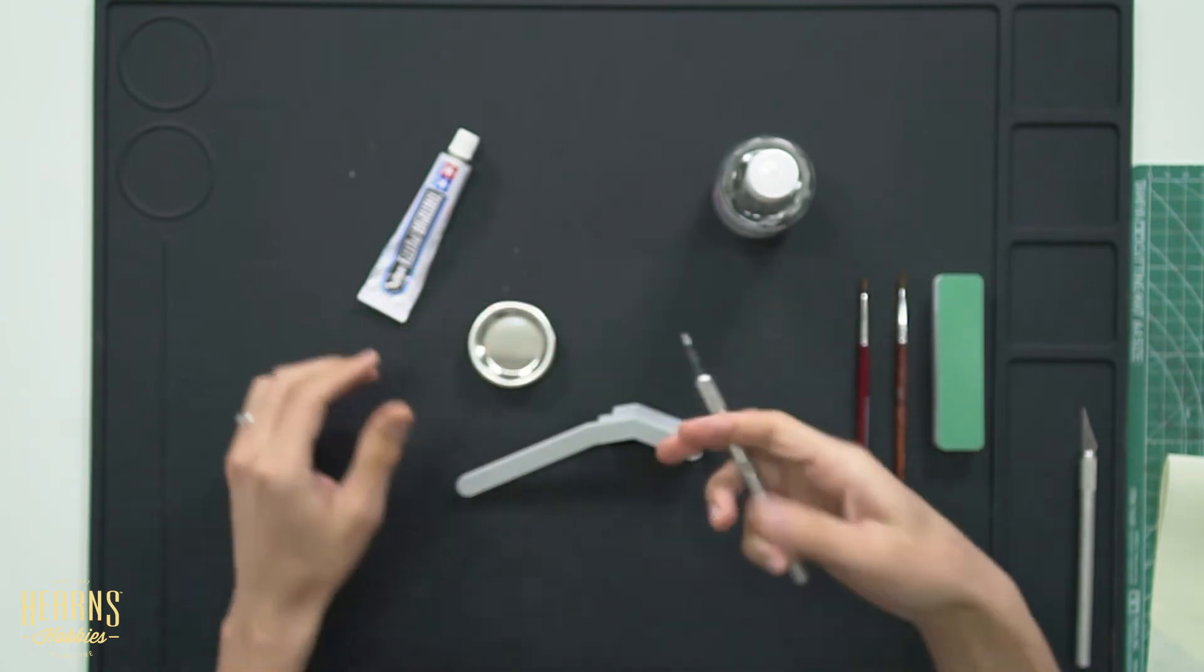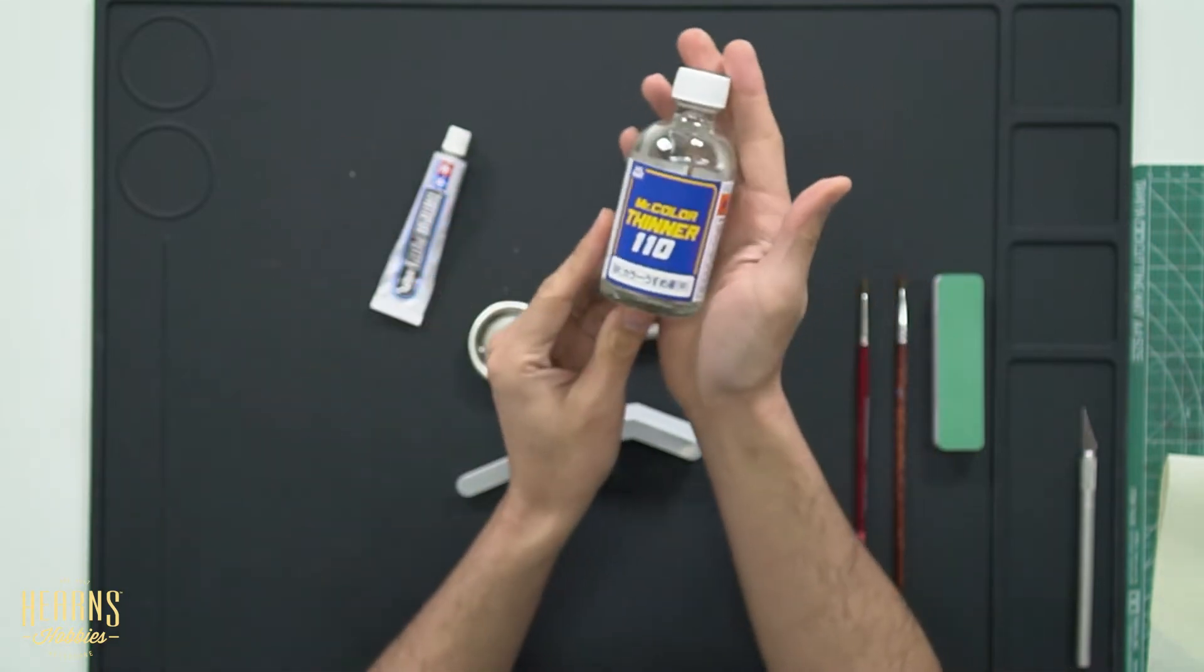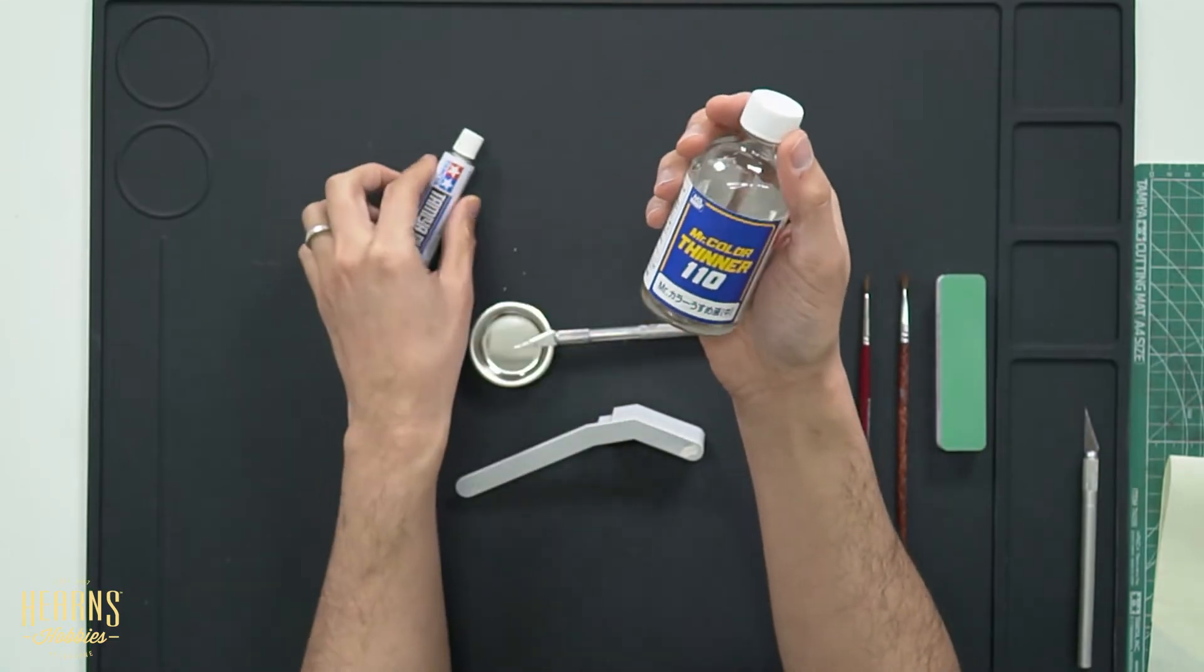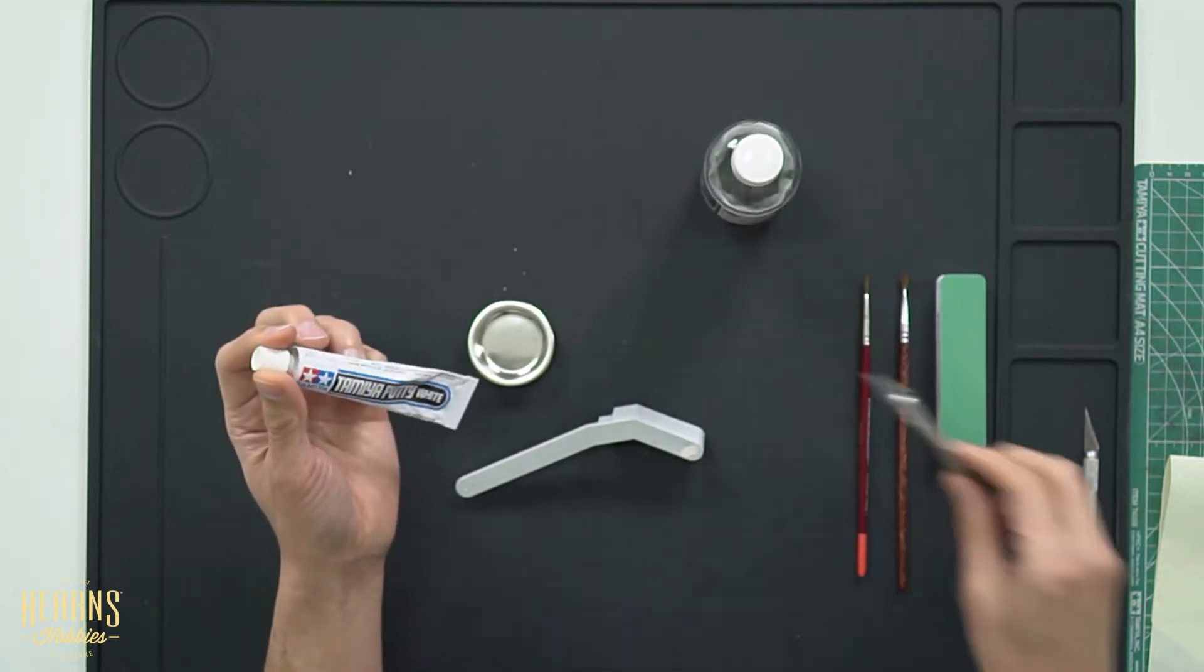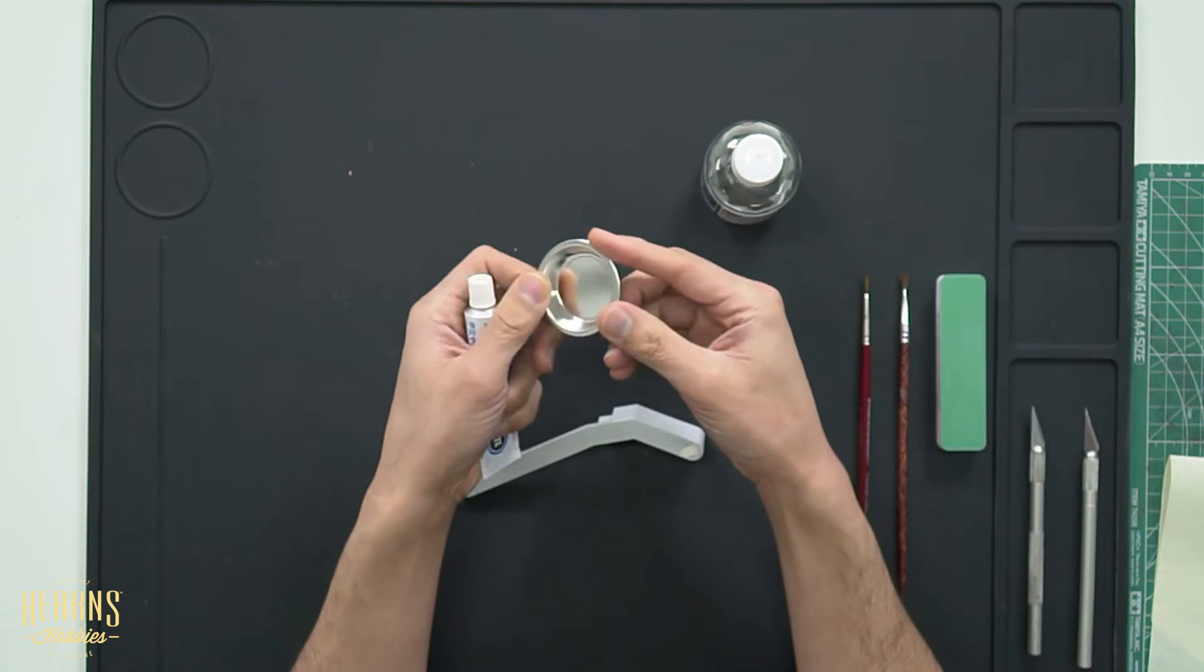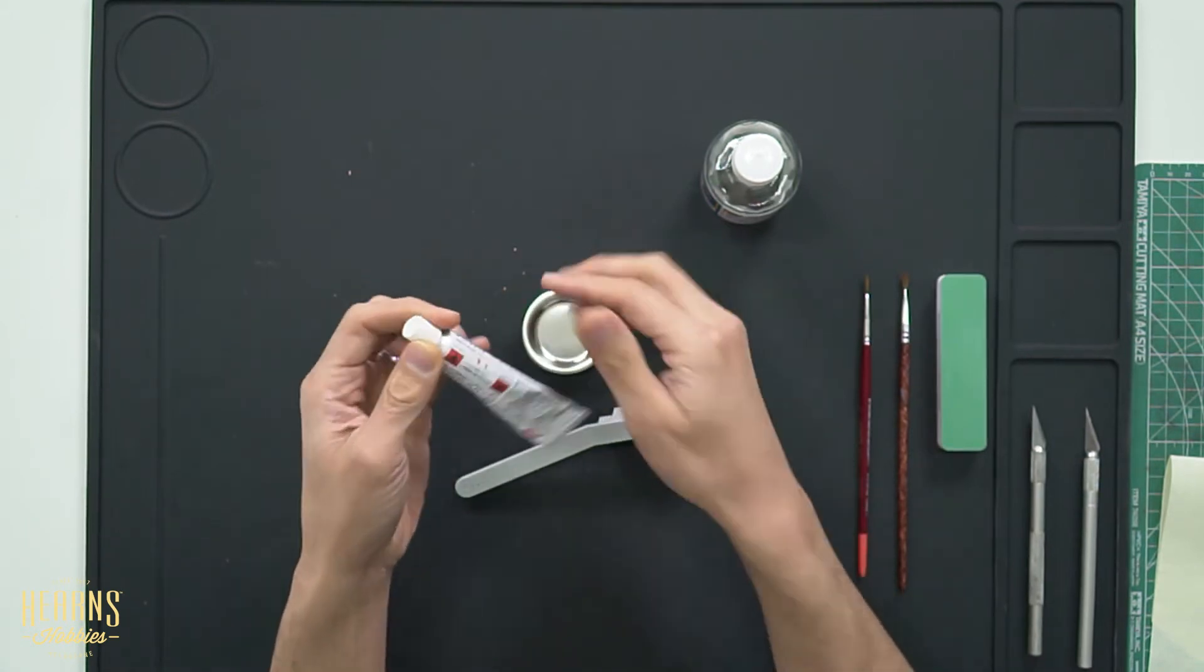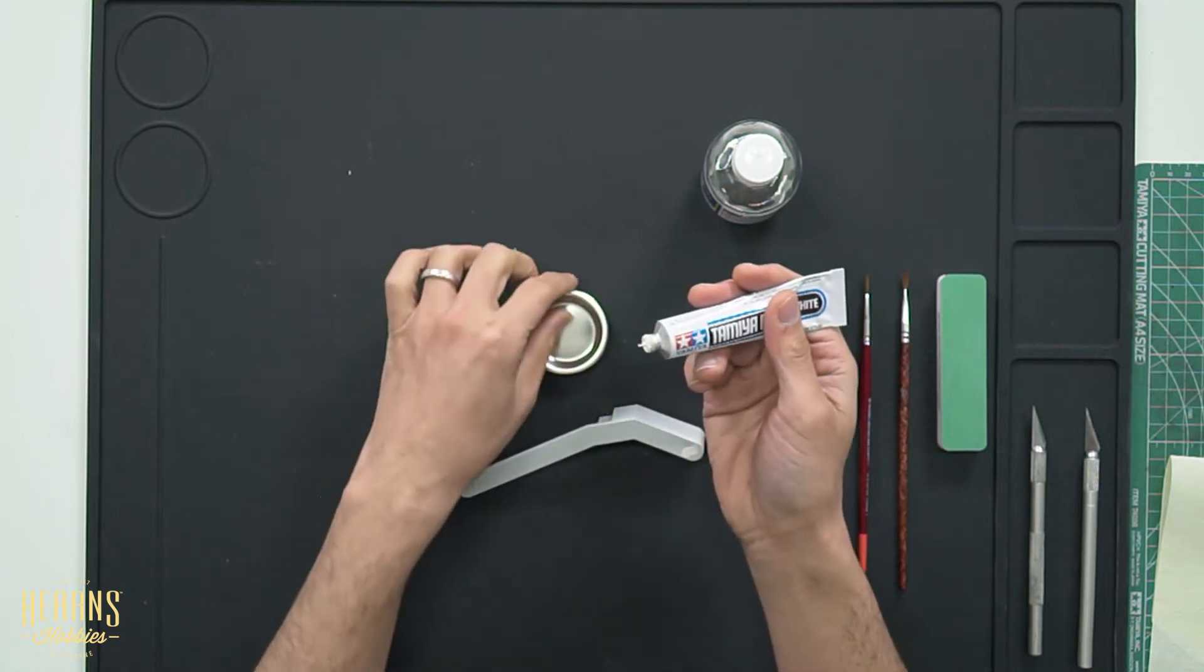Now the easiest way to thin it down is you use lacquer thinners. So here I've got the GSI lacquer thinners but you can use any brand of lacquer thinner for thinning down lacquer-based putties. So let's just get this ready here. I have a little dish here. You can use any dish you like. These are the little stainless steel ones which are made by GSI.